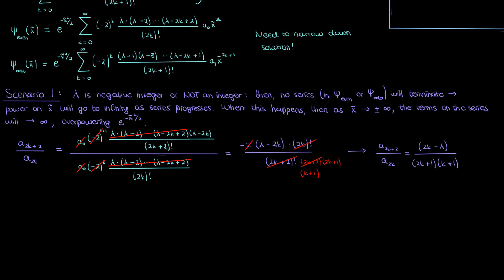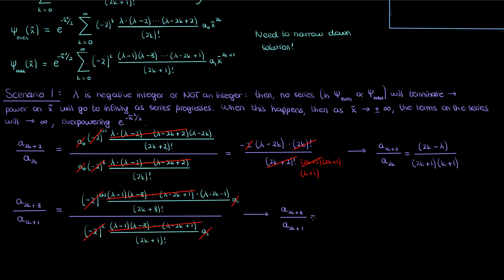We can also compute the ratio of successive odd coefficients a_2k+3 and a_2k+1. The a_2k+1 is just the coefficient shown in the ψ_odd power series, the coefficient of x tilde to the 2k + 1, while the a_2k+3 is found by replacing k by k + 1. Simplifying this ratio gives us the following.